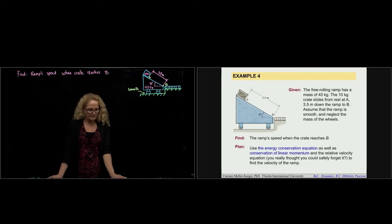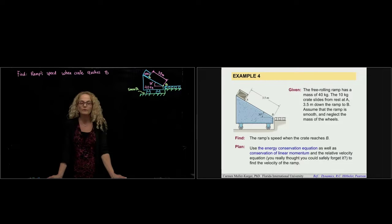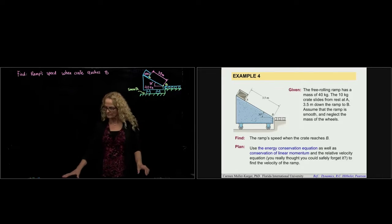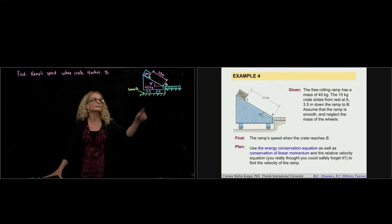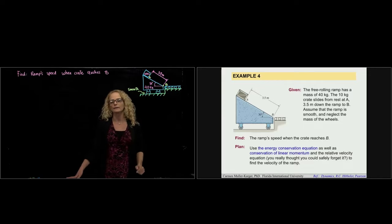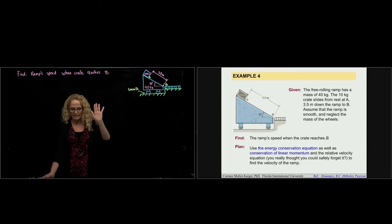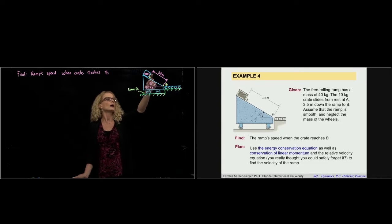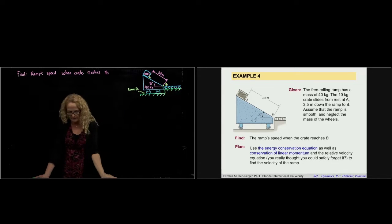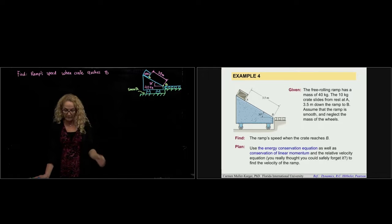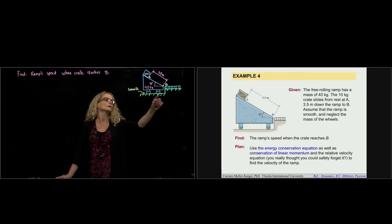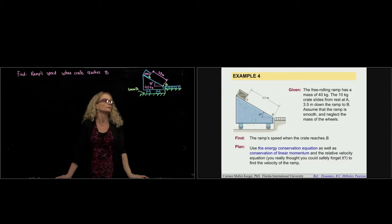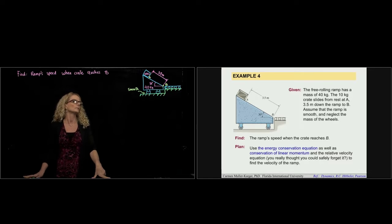This is example number four of section 15.3. The free-rolling ramp has a mass of 40 kilograms and there is a crate of 10 kilograms resting at A. It will go down 3.5 meters to B down the ramp. We will assume that the ramp is smooth and also the wheels with the floor are smooth, so we don't have friction in the problem at all.